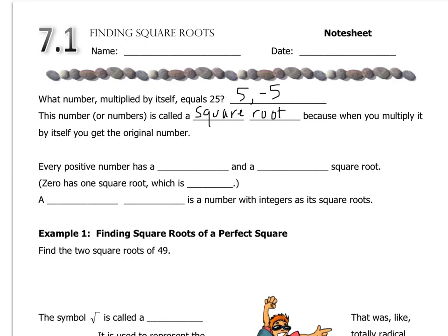Every positive number has a positive and a negative square root. Zero has only one square root, which is 0, because there's no such thing as negative 0. And a perfect square is a number with integers as its square root. Almost every number has a square root, but when your square root is a whole number or an integer, then you are called a perfect square.